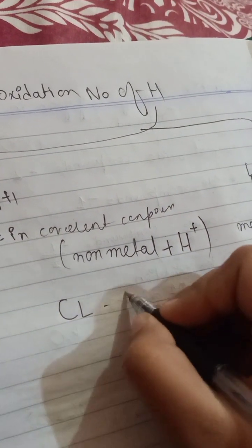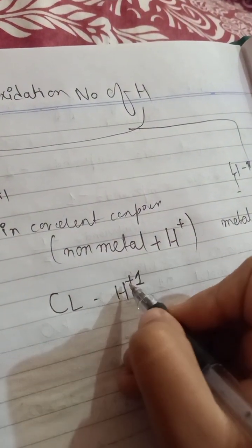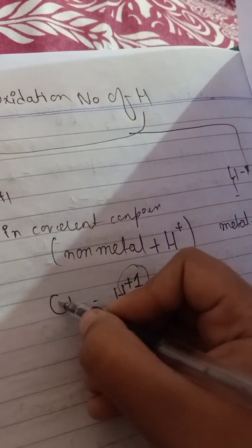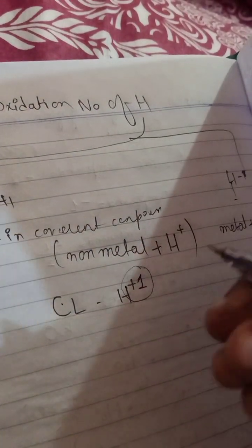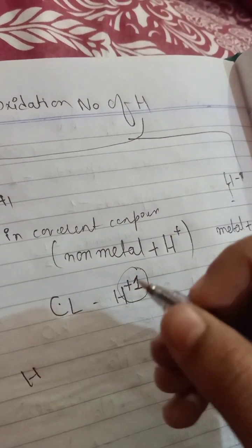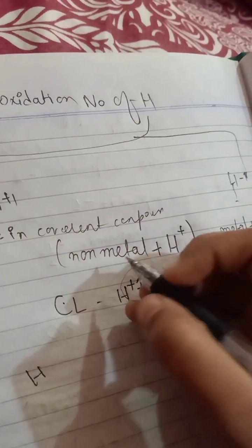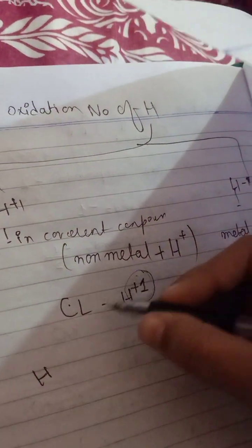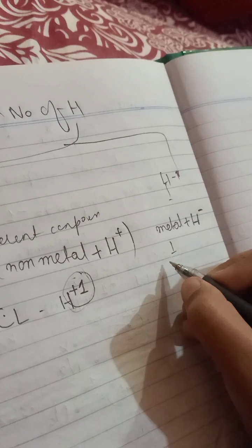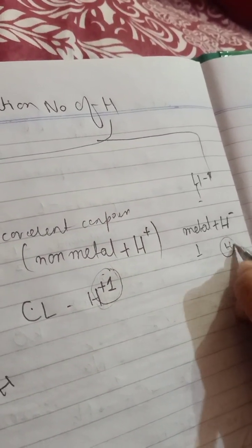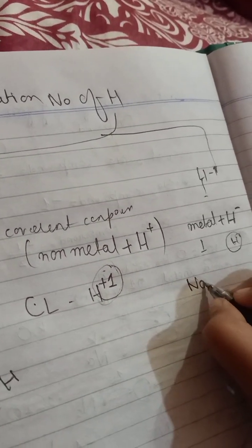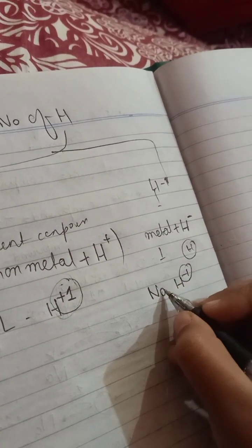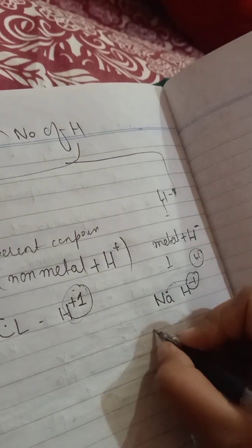For example, chlorine and hydrogen: hydrogen has +1 because chlorine gains one electron from hydrogen. As we know, hydrogen has lower electronegativity than non-metals, so when combining with a non-metal, hydrogen loses the electron. When combining with a metal, the metal has lower electronegativity than hydrogen, so hydrogen gains the electron — giving it a negative oxidation number, for example -1 from sodium.